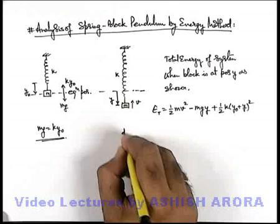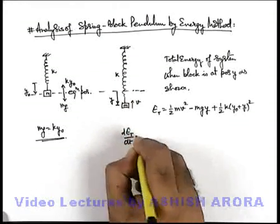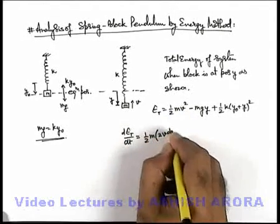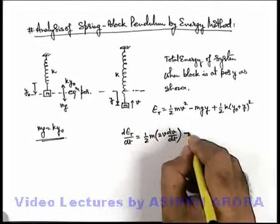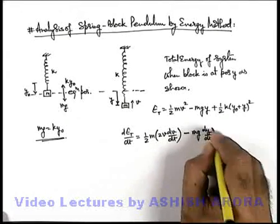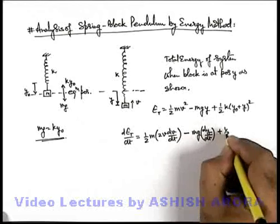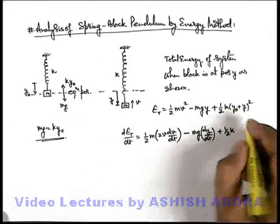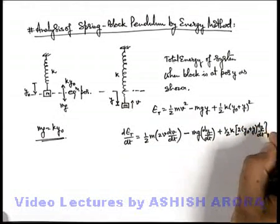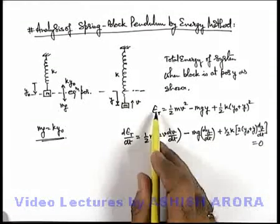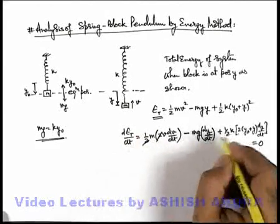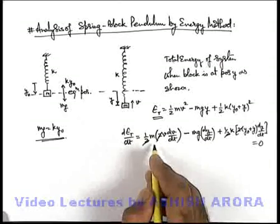We just differentiate it with respect to time. This will be dE/dt. Here ½m is a constant, v² when we differentiate it will be ½m·2v·dv/dt minus mg·y, the displacement can be differentiated as dy/dt. Plus ½k when we differentiate (y₀ + y)² it'll be twice of (y₀ + y) into dy/dt and this should be equated to zero because total energy does not vary with time. In this expression if we just have a look carefully this 2 gets cancelled out.